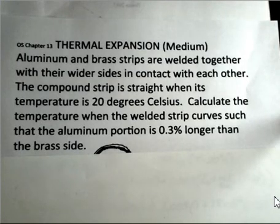In this video, we'll calculate using the concepts of thermal expansion and determine the temperature when a certain differential expansion has occurred. You might encounter this as a bimetallic strip where aluminum and brass, in this case, the strips are flat and the flat sides are welded together so they maintain contact. This compound strip is, for our problem, straight when the temperature is 20 degrees Celsius. We want to determine the temperature when the aluminum side is 0.3% longer than the brass side.